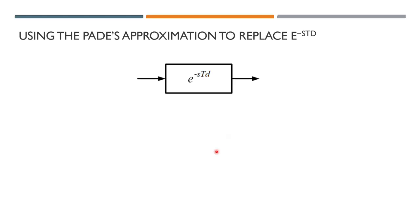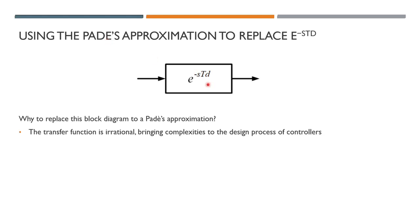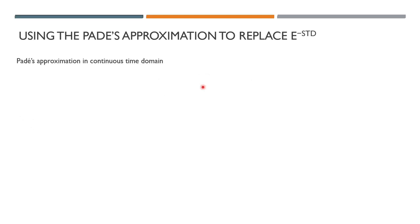The delay is represented by the block e^(−s·td) in block diagrams. We could use this transfer function directly in control system design, but we opt to use the Padé approximation instead. The reason is that this transfer function is irrational, which brings complexity and several difficulties when designing controllers. So the solution is to replace it with one of the Padé approximations.